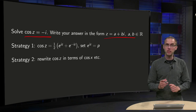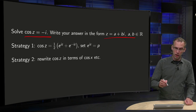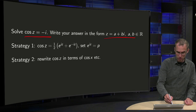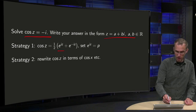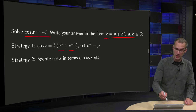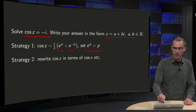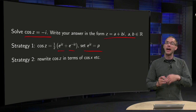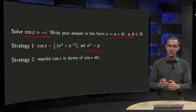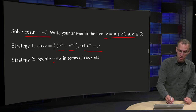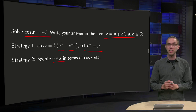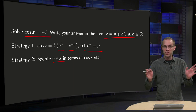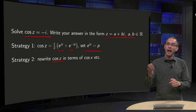We can have two strategies. The first one is that we set cosine z equals ½(e^(iz) + e^(-iz)) and then set e^(iz) equals p — that's the first strategy. The second strategy: we can also rewrite the cosine of z in terms of the cosine of x, hyperbolic cosine, etc., and then continue.